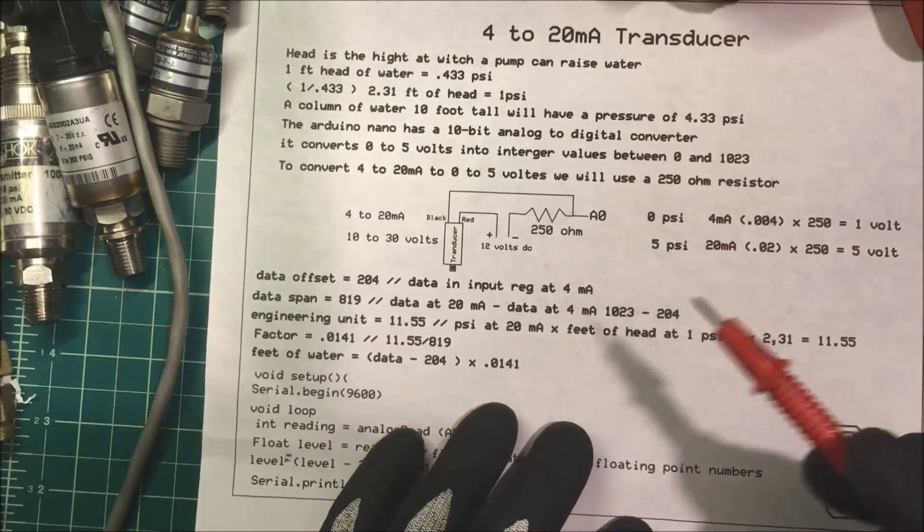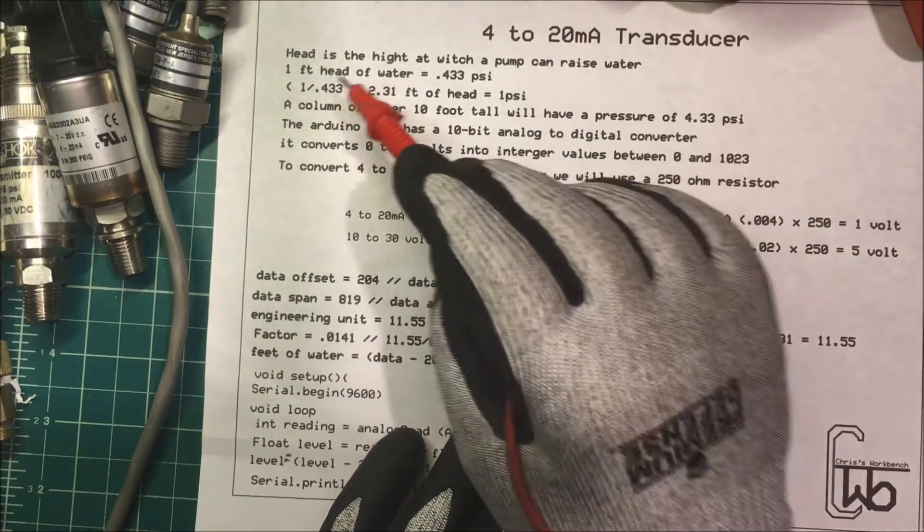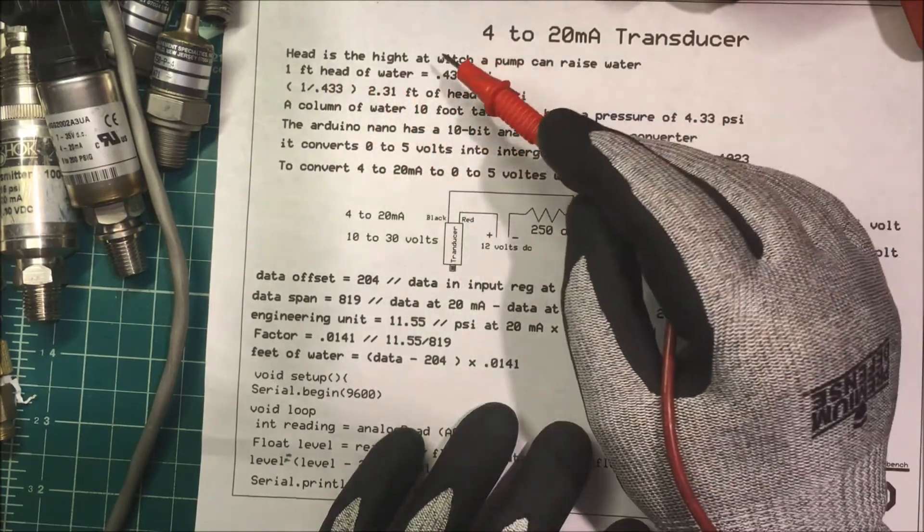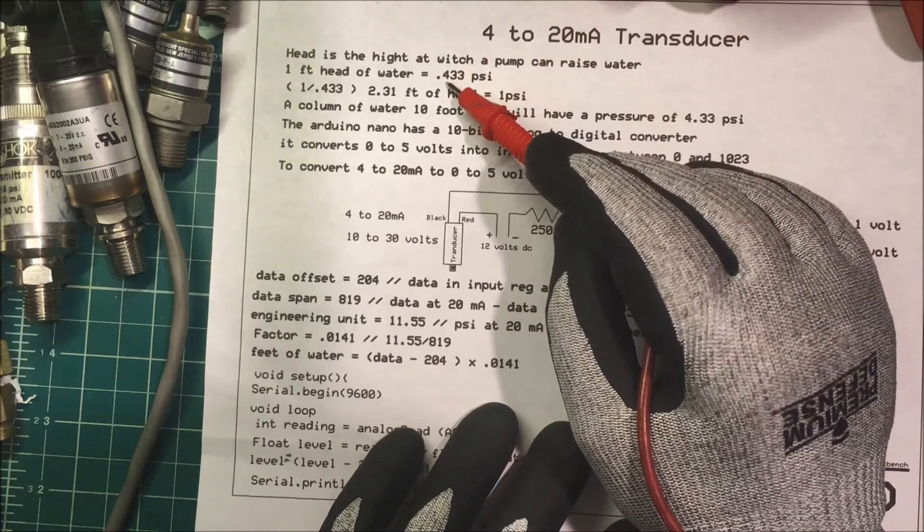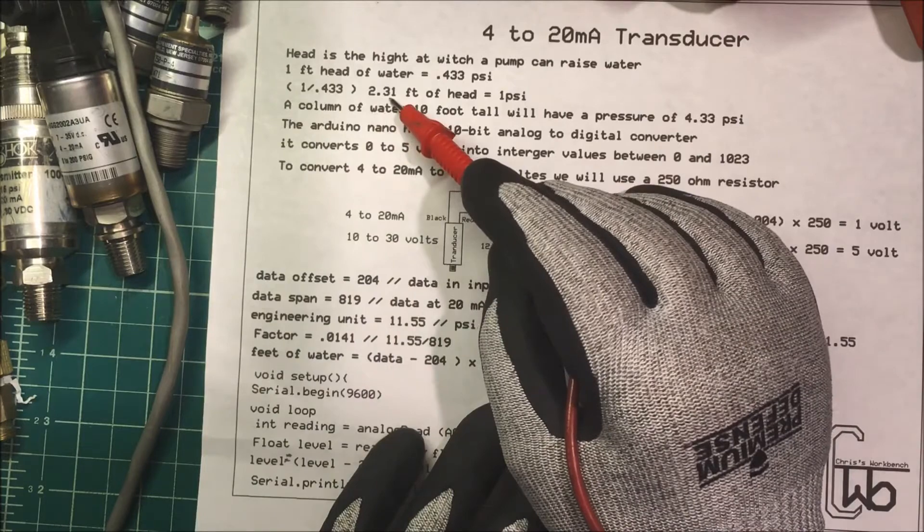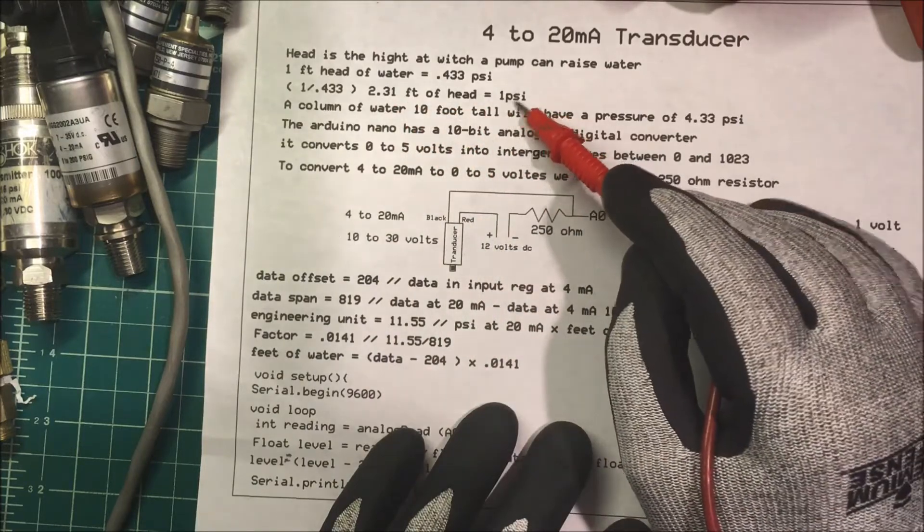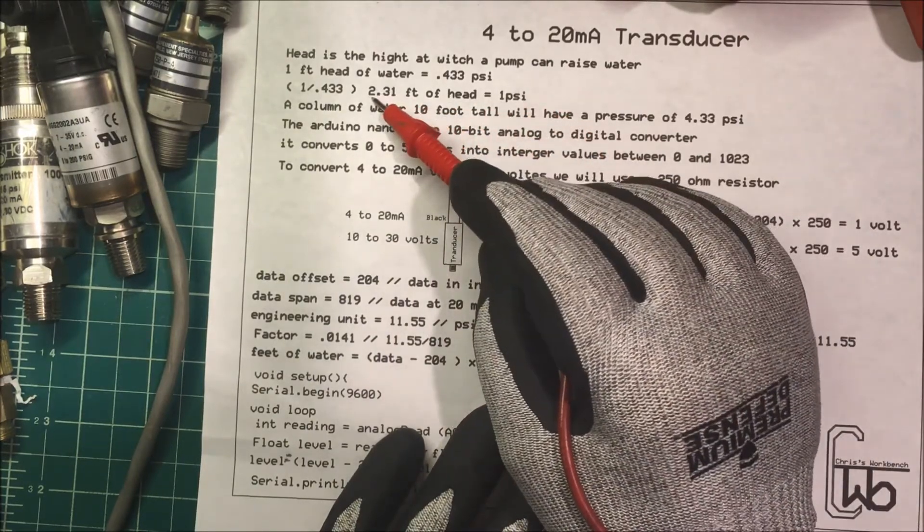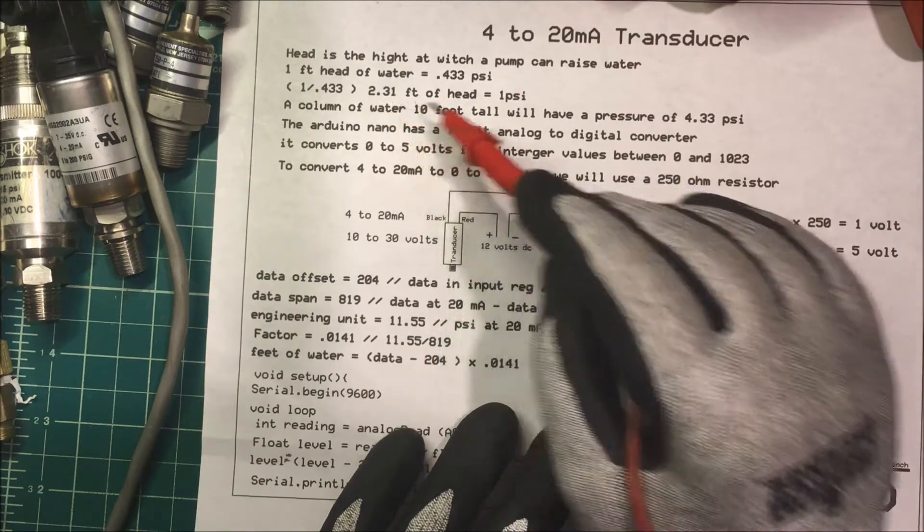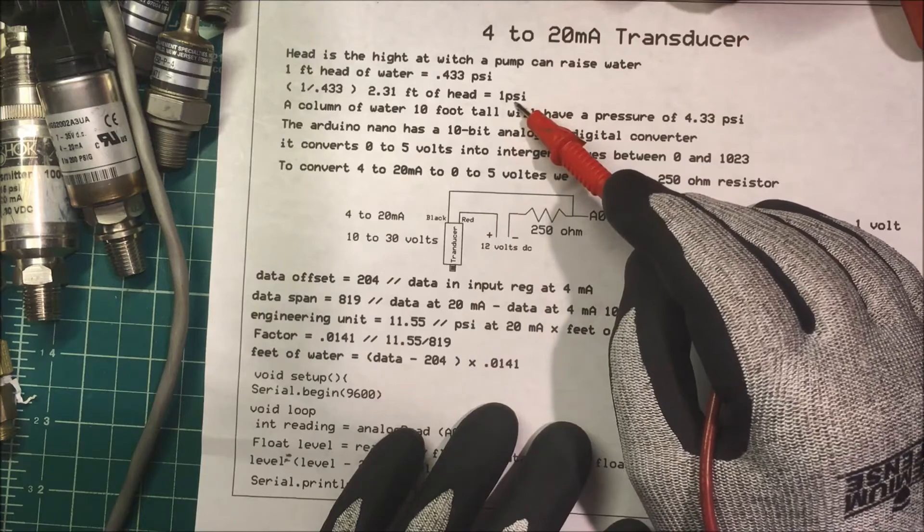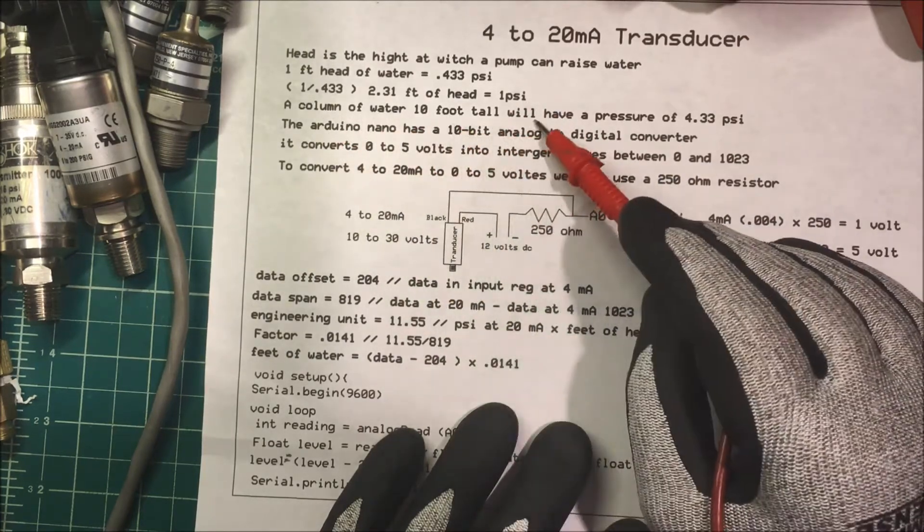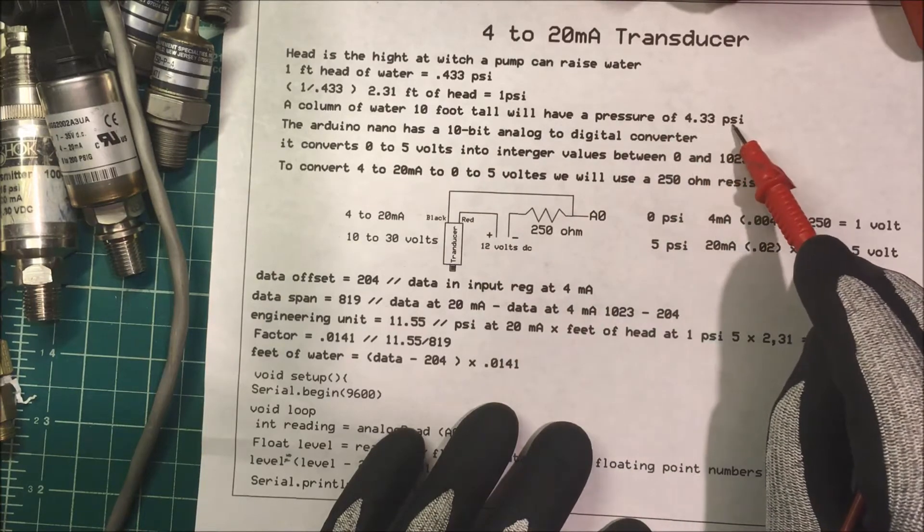So we need to know some terms. Head is the height at which a pump can raise water. So one foot of head is equal to 0.433 psi. If you take the reciprocal, 2.31 feet of head is 1 psi. So that means a column of water that's 2.31 feet tall exerts a pressure of 1 pound per square inch. So a column of water that's 10 feet tall will have a pressure of 4.33 psi.